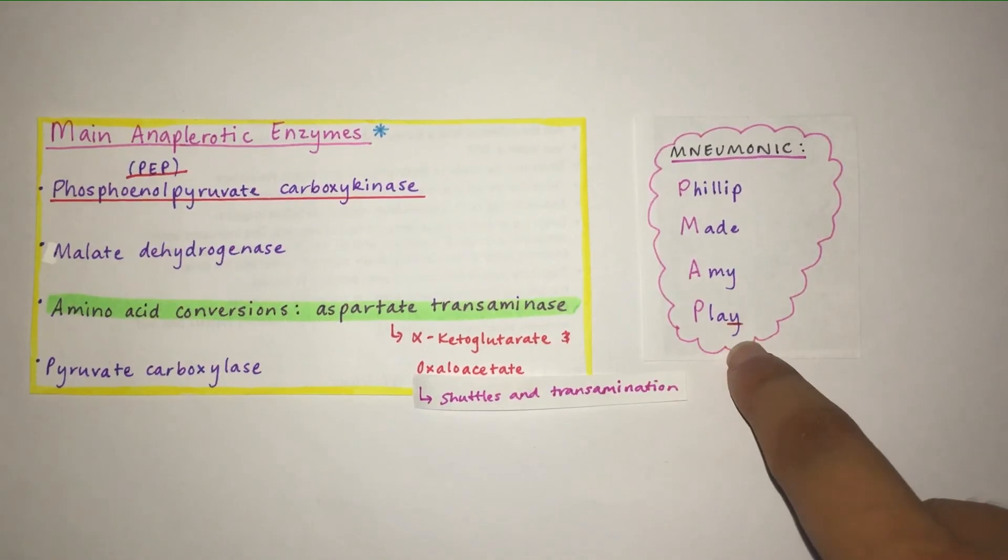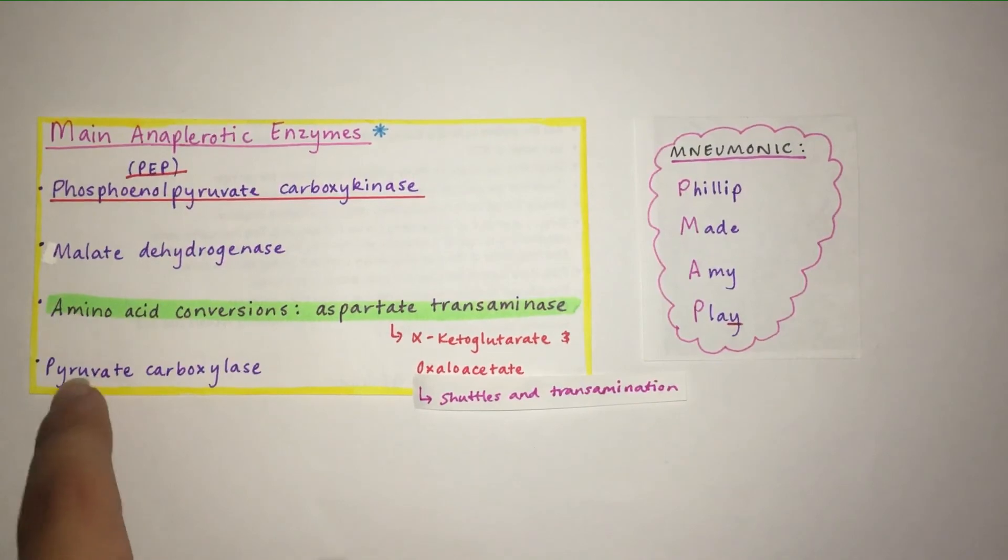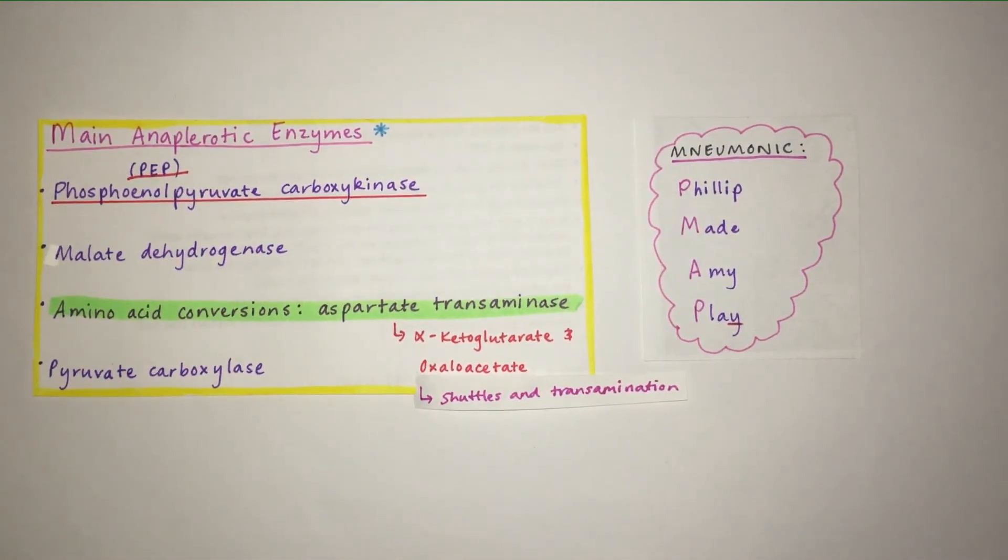Also note that in the mnemonic the Y is underlined there, because play - that Y may help you remember that it's pyruvate carboxylase. Just a little note that could help you remember, a little memory trick. So that's what you need to know about anaplerotic reactions.